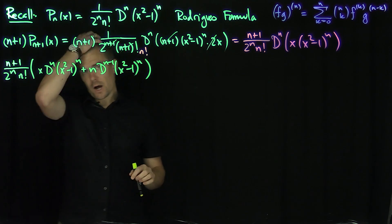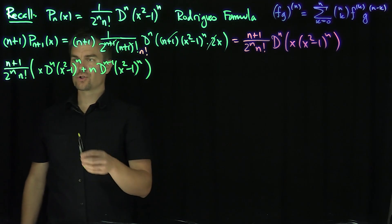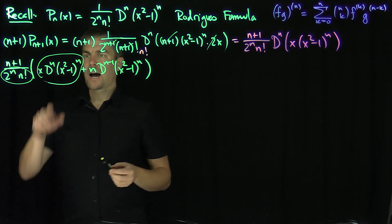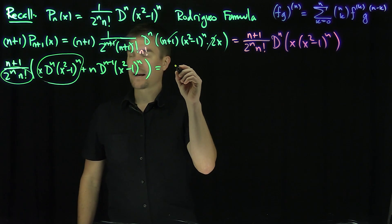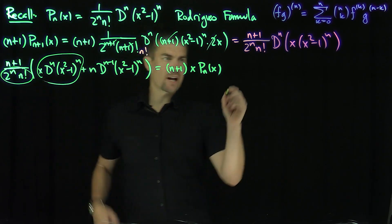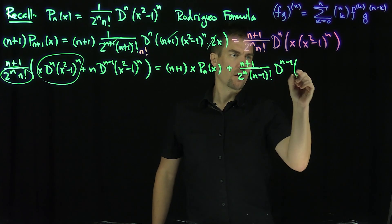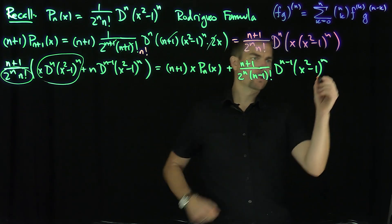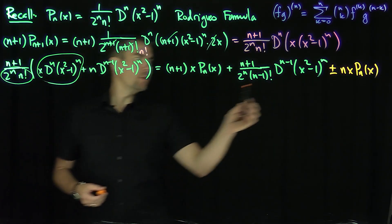Now I have fewer derivatives on the second term, so I need to extract more structure to get a recursion. The first expression — d^n of x squared minus 1 to the n, over 2^n n factorial — is just P_n of x. So we get (n+1) x P_n(x), plus (n+1) over 2^n (n−1) factorial times the (n−1)th derivative of x squared minus 1 to the n. I'll now add and subtract n x P_n(x), which gives 2n+1 times x P_n(x), plus the remaining term.